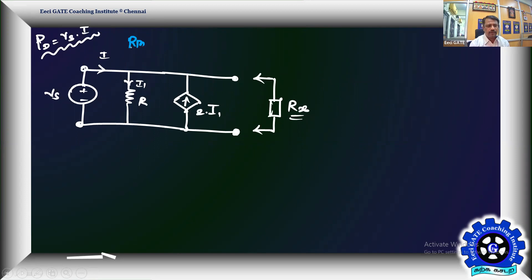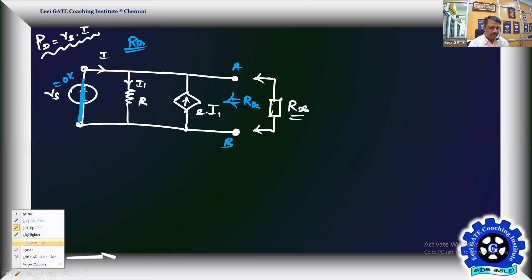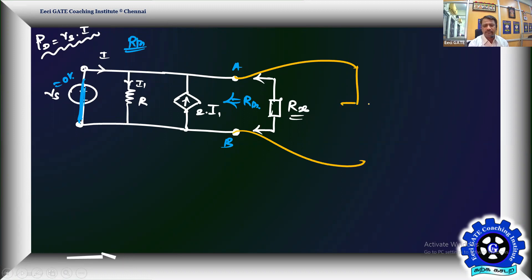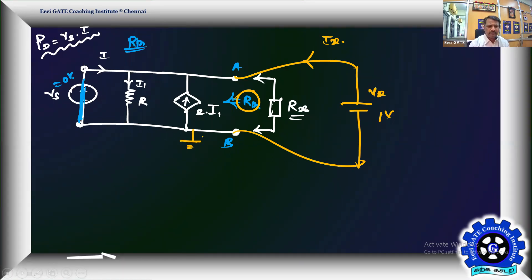For R_Thevenin, the basic principle is to short only the independent source and find the resistance seen at the terminals. With the source shorted, we apply a test voltage Vx at the terminals and look for the resulting current Ix, so R_Thevenin = Vx / Ix.